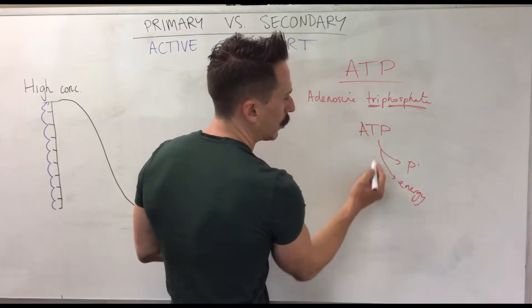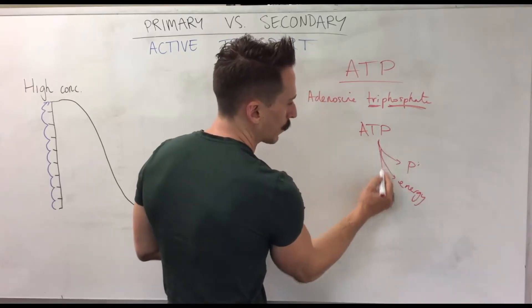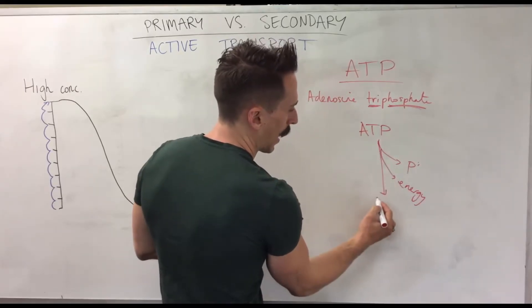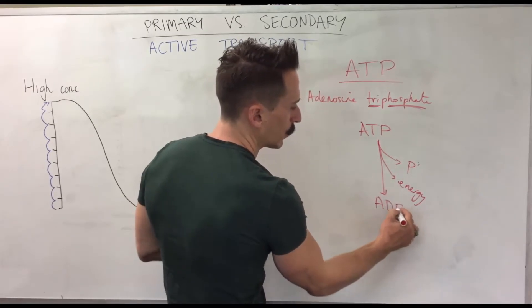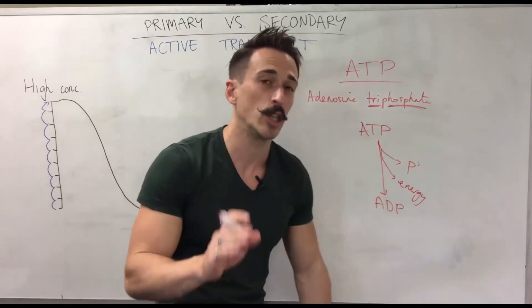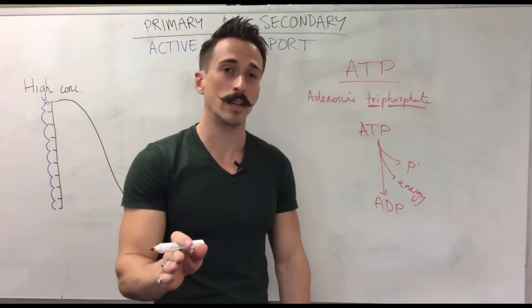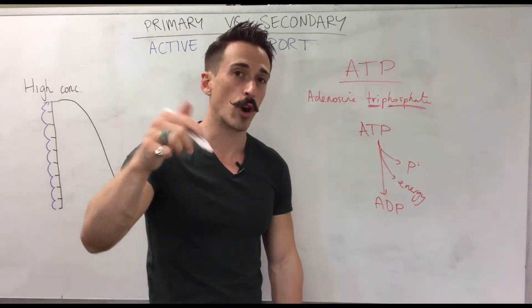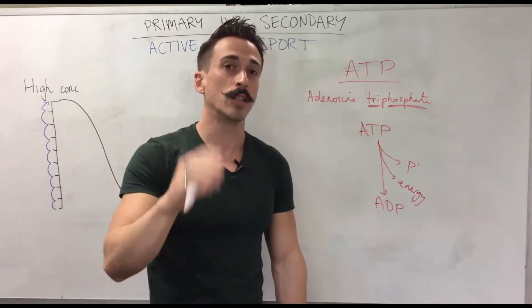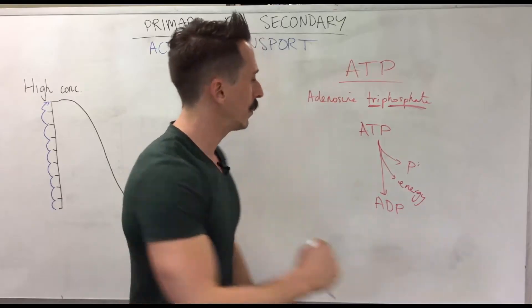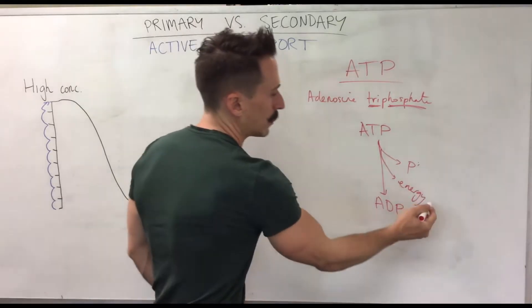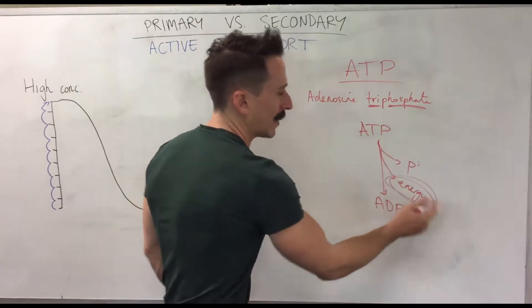You are then left with something called ADP — adenosine diphosphate. You go from tri (3) to di (2), and what we've done is released energy.